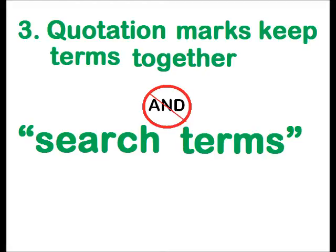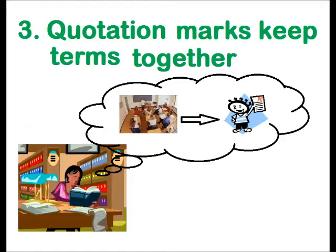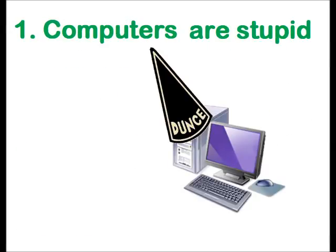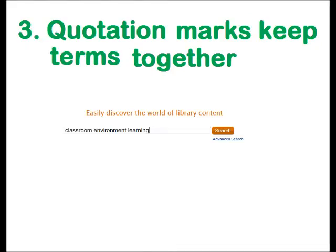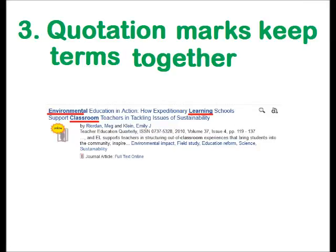Let's imagine that you're a student doing a research paper on how the classroom environment contributes to learning. Now you remember point number one, computers are stupid. You simply type classroom environment learning in the search box. You may end up with articles speaking about how students learn about the environment in their classroom, not the topic you're looking for.